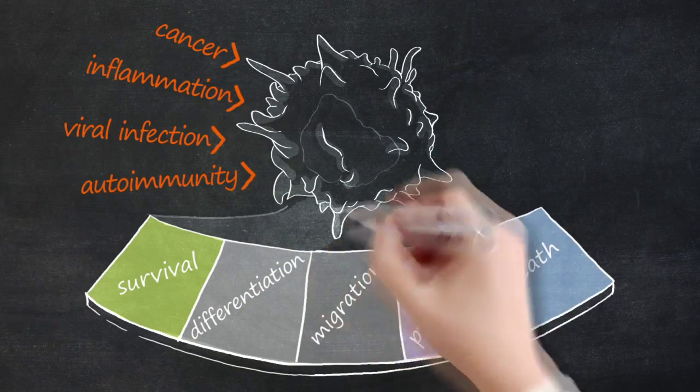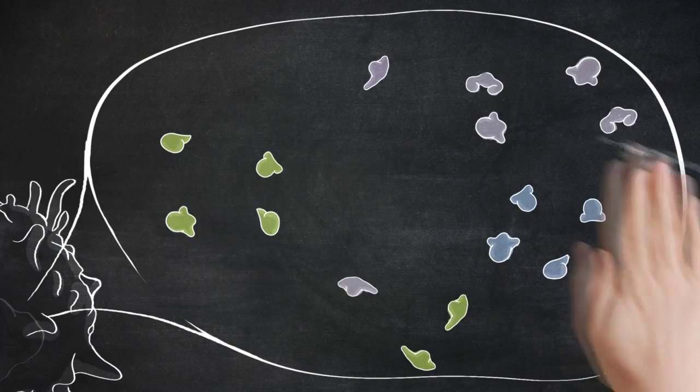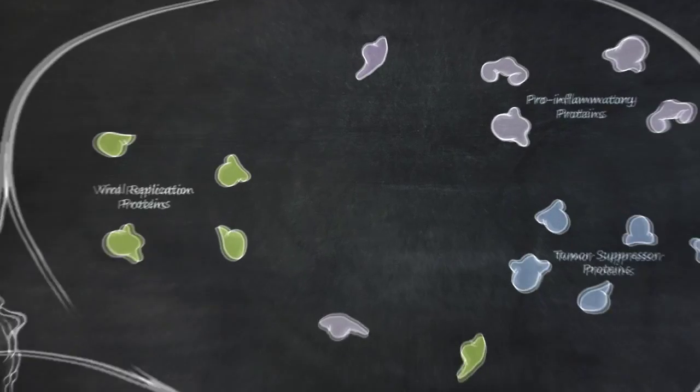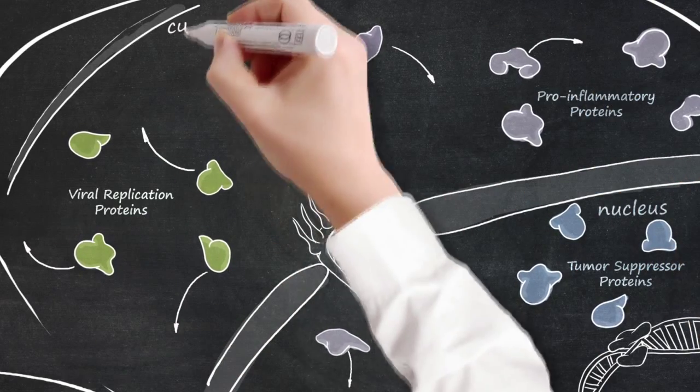The fate of the cell is often controlled by the localization of proteins. They affect the cell differently depending on their location, for instance in the nucleus or in the cytoplasm.